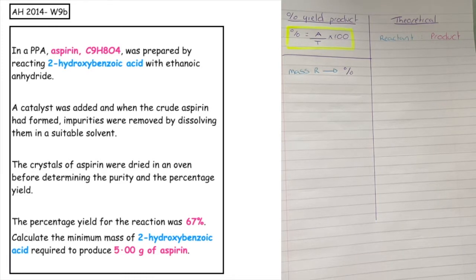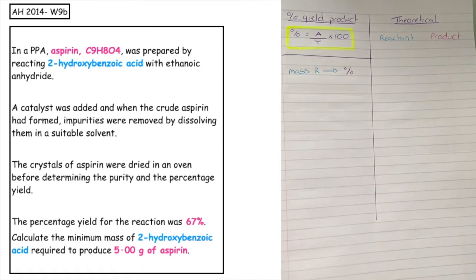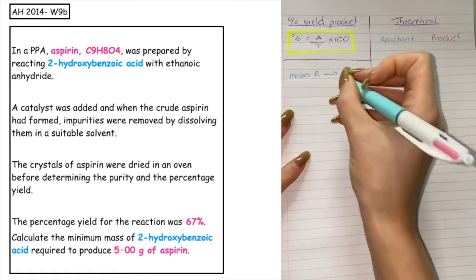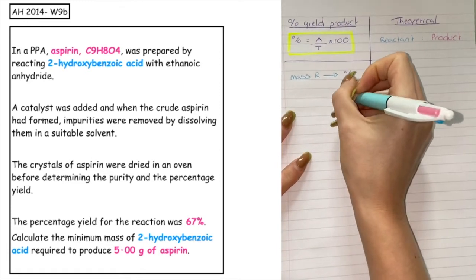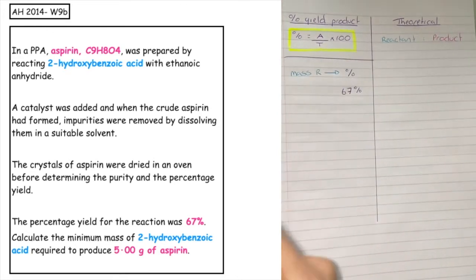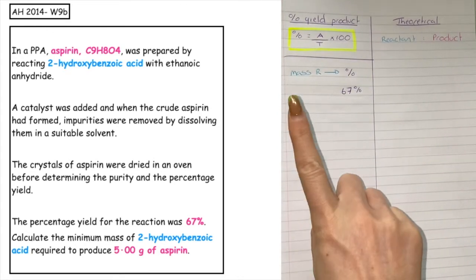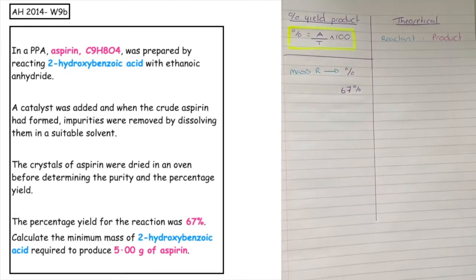The percentage yield for the reaction was 67% — that's what we were given. We want to calculate the minimum mass of 2-hydroxybenzoic acid required to produce 5g of our product.